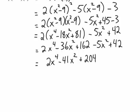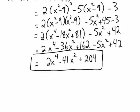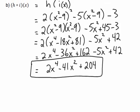We combine all like terms to get our final solution: 2x to the 4 minus 41x squared plus 204. That is our composite function h of i of x.